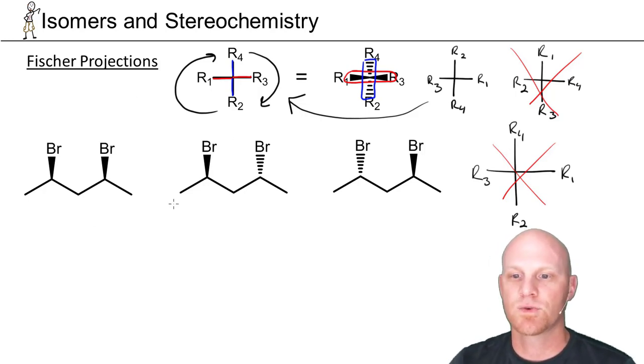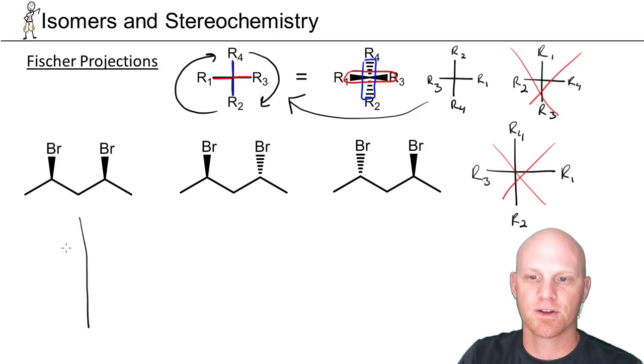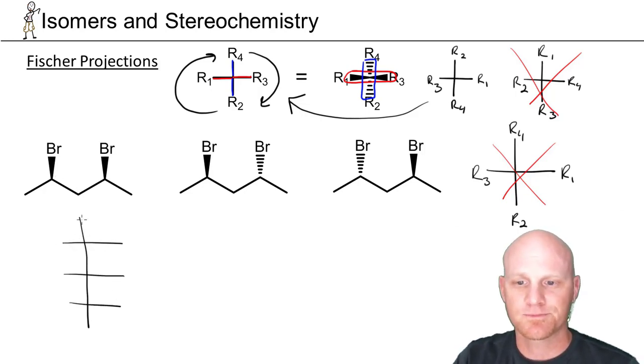So let's take a look at the structures we've got here and let's turn them into Fischer projections. It's customary for a Fischer projection to draw them vertically when you have many tetrahedral atoms. We've got three tetrahedral atoms, with a methyl group at the top and methyl group at the bottom.